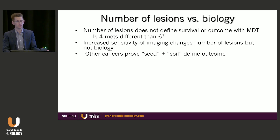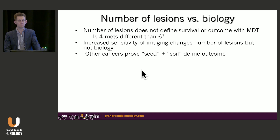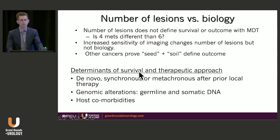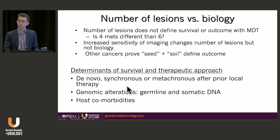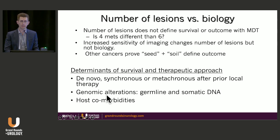Other cancers, particularly lung cancer and colon cancer, have proven that it's a combination of the seed — the tumor intrinsic properties — with the soil — the site of metastasis — that define clinical outcome. The determinants of both survival and my therapeutic approach include clinical variables: whether this is de novo synchronous metastasis or metachronous metastasis after prior local therapy, the tumor intrinsic properties looking at both germline and somatic DNA, and very importantly, patient host comorbidities.